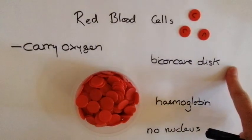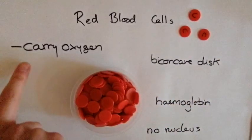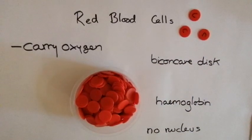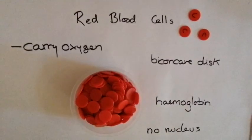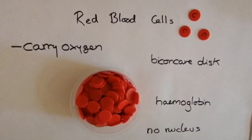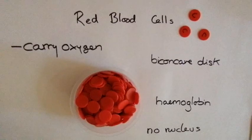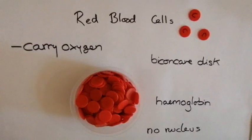So to summarise: the biconcave disc shape gives it a large surface area, so it's easy to get oxygen in and out. The biconcave disc also makes it flexible, so it can squeeze through the teeny tiny capillaries and deliver oxygen all the way around the body to all cells and tissues. Haemoglobin is the chemical inside the red blood cell — thousands of pieces in every cell — and it's the bit that actually grabs hold of the oxygen. The fact that the nucleus has been removed means even more haemoglobin can fit, so it can carry even more oxygen.